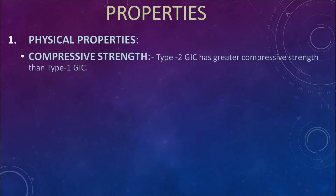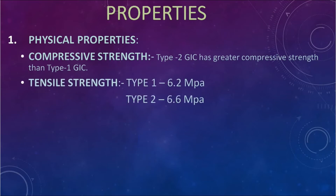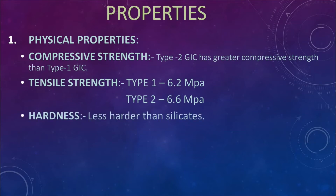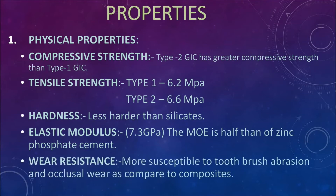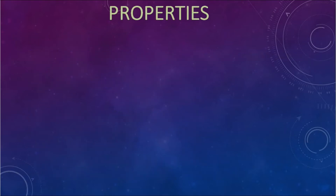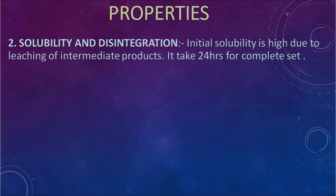Properties — Physical properties: compressive strength of Type 2 GIC is greater than Type 1. Tensile strength: Type 1 is 6.2 MPa and Type 2 is 6.6 MPa. Hardness is less than silicates. Elastic modulus is 7.3 GPa, which is about half that of zinc phosphate cement. Wear resistance: more susceptible to toothbrush abrasion and occlusal wear compared to composites. Initially, solubility is high due to leaching of intermediate products; after 24 hours, Type 1 is 1.2% by weight and Type 2 is 0.4% by weight.